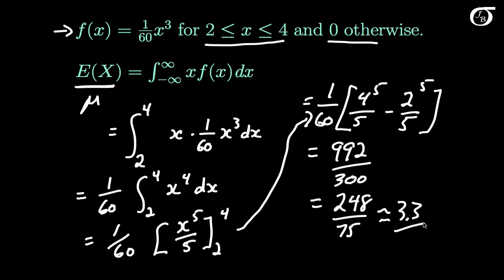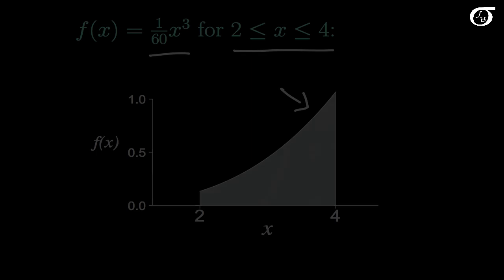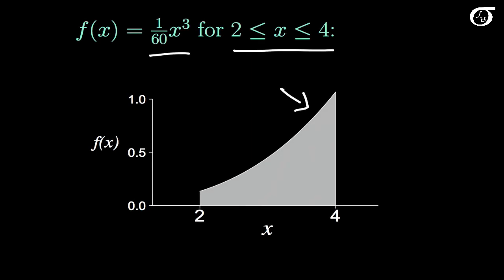And that is the mean of the distribution. If we go back to our plot of the PDF, we'd have 3 right in the middle here, and we would see that values near 4 are more likely than values near 2. And that draws the mean over here to about 3.3. That's our mu, our mean of this probability distribution.